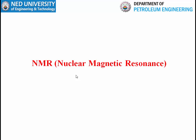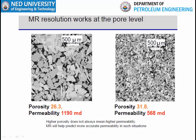Permeability and porosity are the key uses of the NMR log. Generally there is no direct linkage between porosity and permeability — in some cases porosity is lower but permeability is higher, and in other cases porosity is higher but permeability is lower. Depending on grain size, cementation, and other parameters, a rock may have low porosity but high permeability compared to another rock. NMR log helps predict more accurate permeability in such situations.